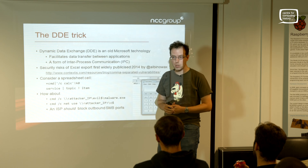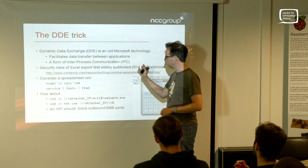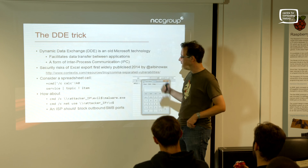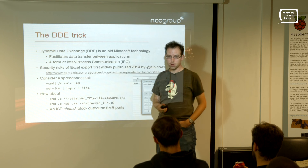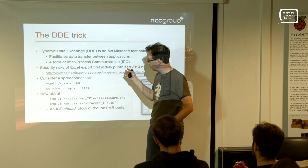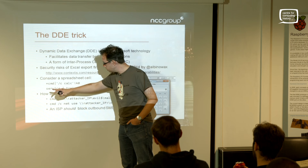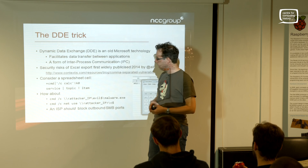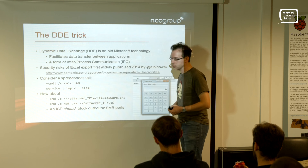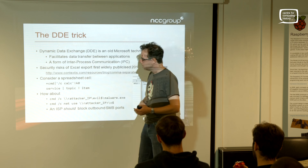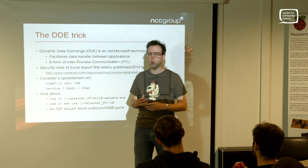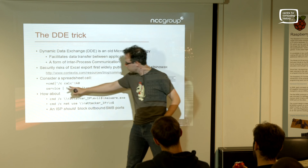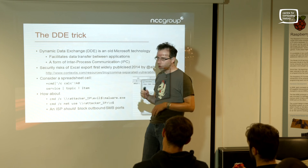Dynamic data exchange is an old Microsoft technology - really old - that facilitates data transfer between applications and is a form of interprocess communication. The security risks were first publicized only a couple of years ago by James Kettle, who now works for Portswigger. The basic idea: consider a spreadsheet cell with this as its value - equals CMD pipe. This is the basic structure of a DDE call in Excel format, with a pipe and exclamation mark as delimiters, where you have a service, a topic, and an item.